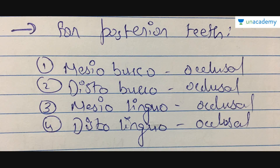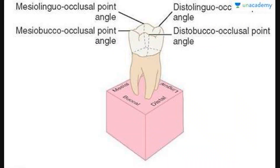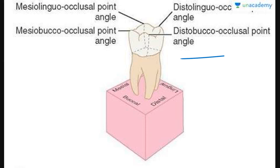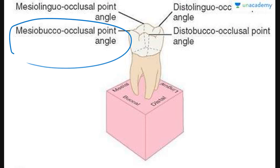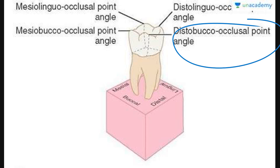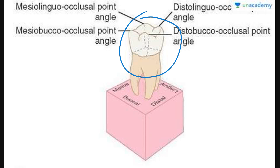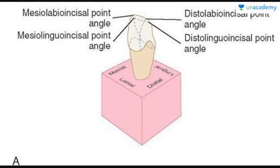Now for point angles of posterior teeth — you can see in the diagram. The mesiolinguoincisal point angle, but as this is a posterior tooth, you will see an occlusal surface here. Then distolinguoincisal point angle, followed by mesiobuccoocclusal point angle and distobuccoocclusal point angle. You can see in the diagram how these point angles are meeting. This is the diagrammatic view for the point angles of posterior teeth.